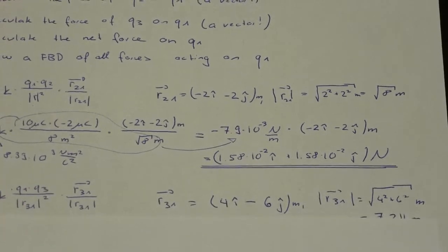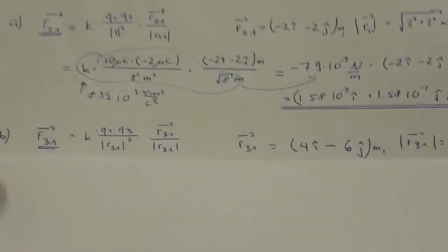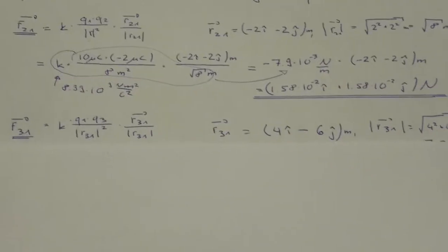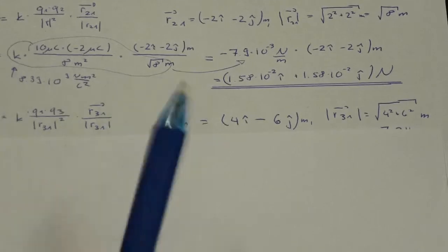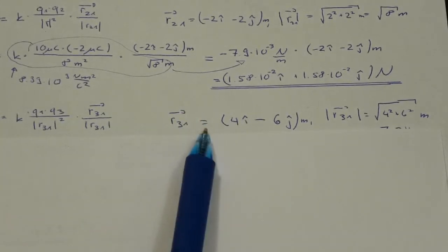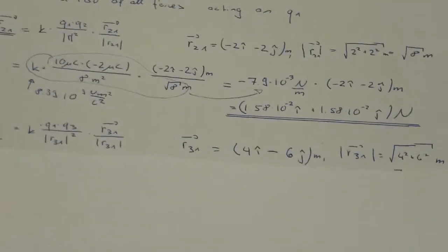Now let's do the same for charge number 3. Again I need the vector from 3 to 1. How did I get that one?